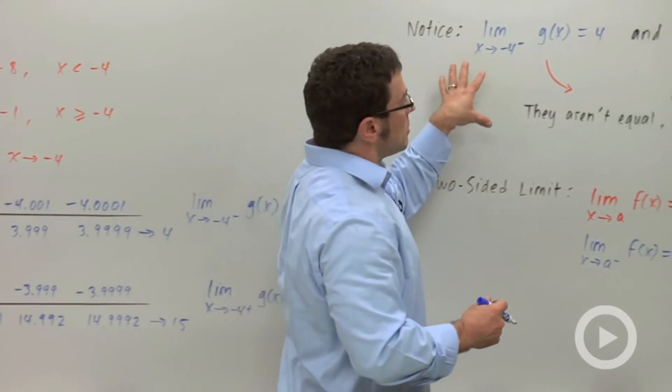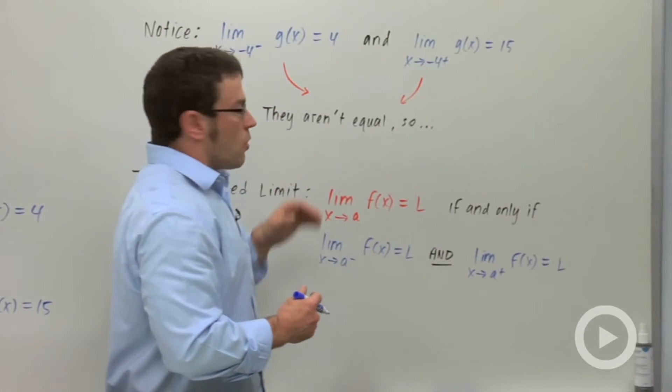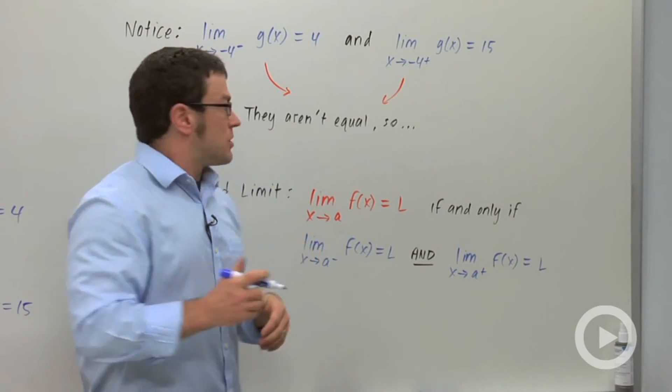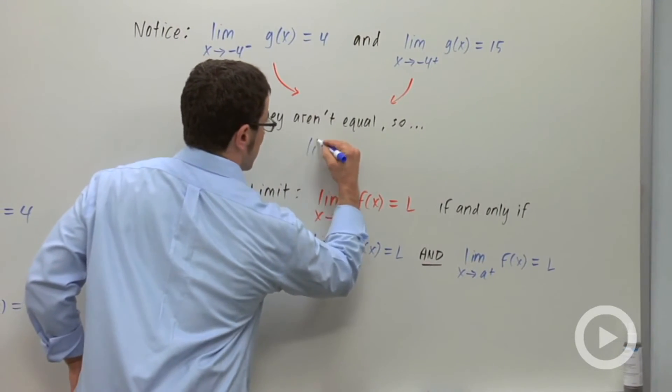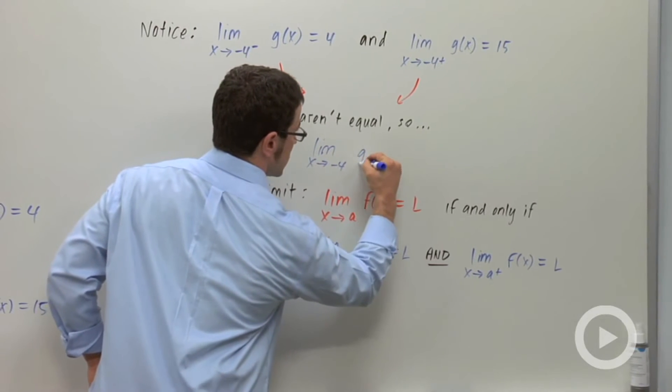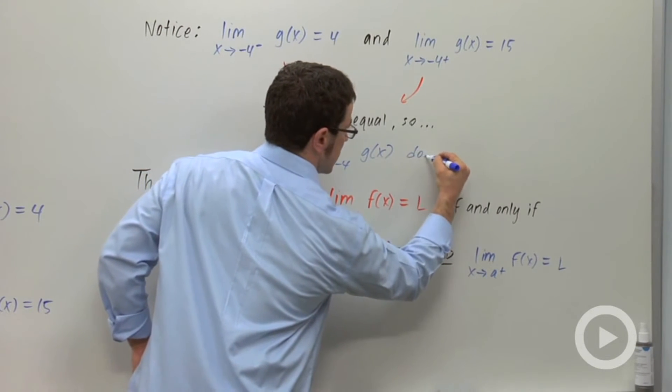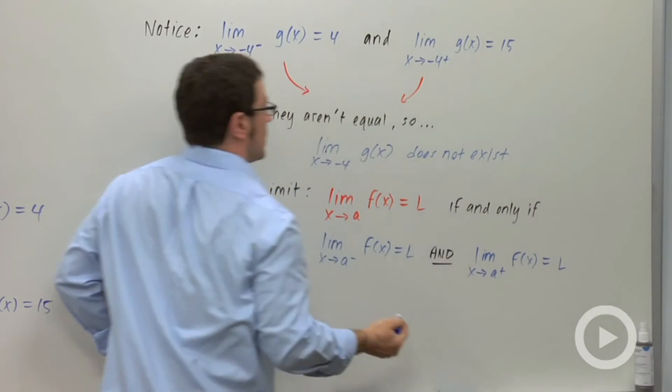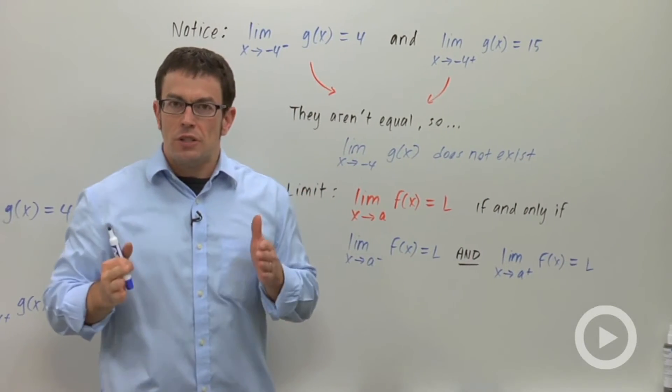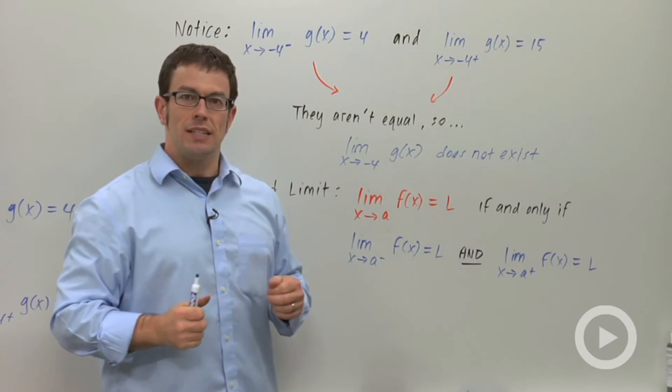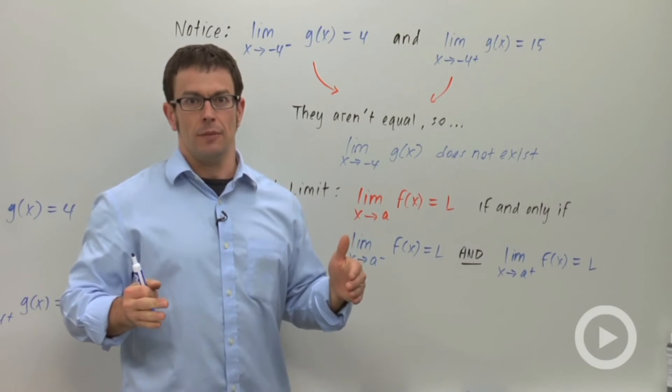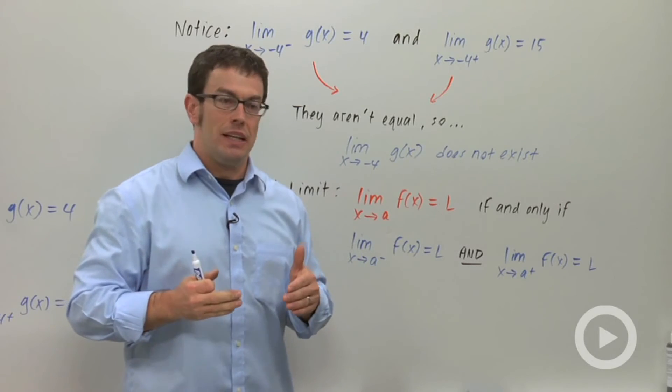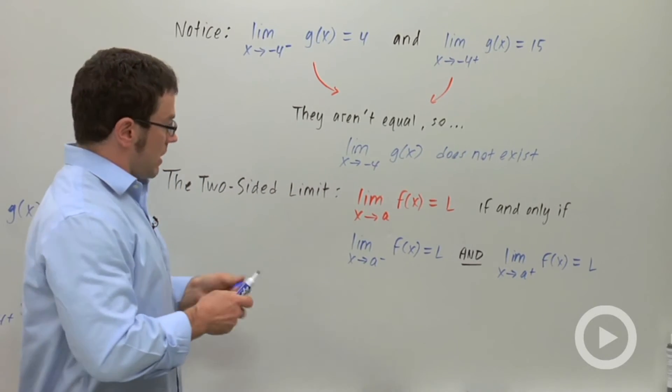Now, notice these two limits are not equal. Whenever the two one-sided limits are not equal, the two-sided limit, x approaches negative 4 in this case, does not exist. Very important. So in order for a two-sided limit like this to exist, you need both of the one-sided limits to exist and for them to be equal. And that's what this theorem states right here.